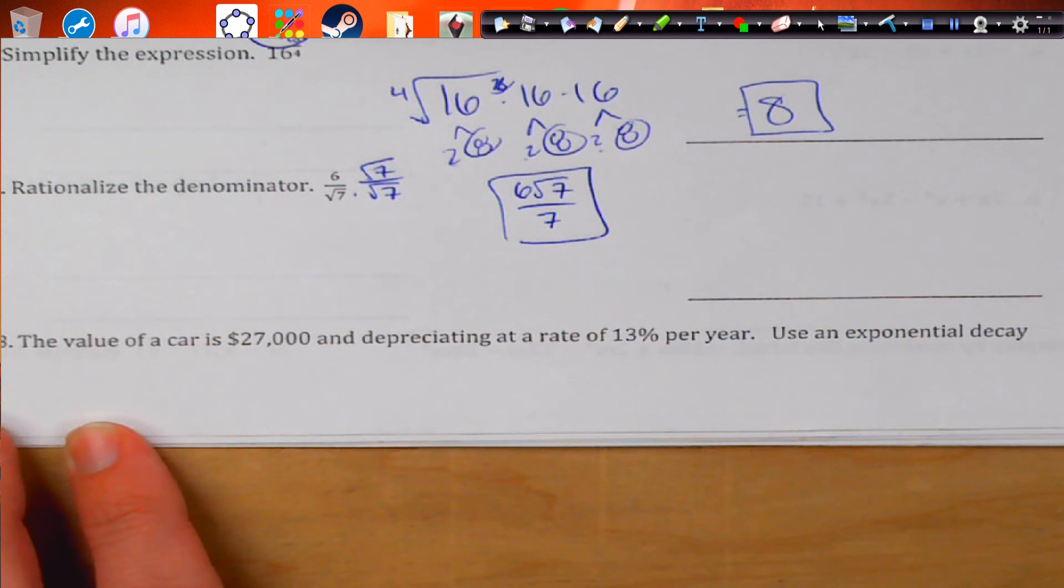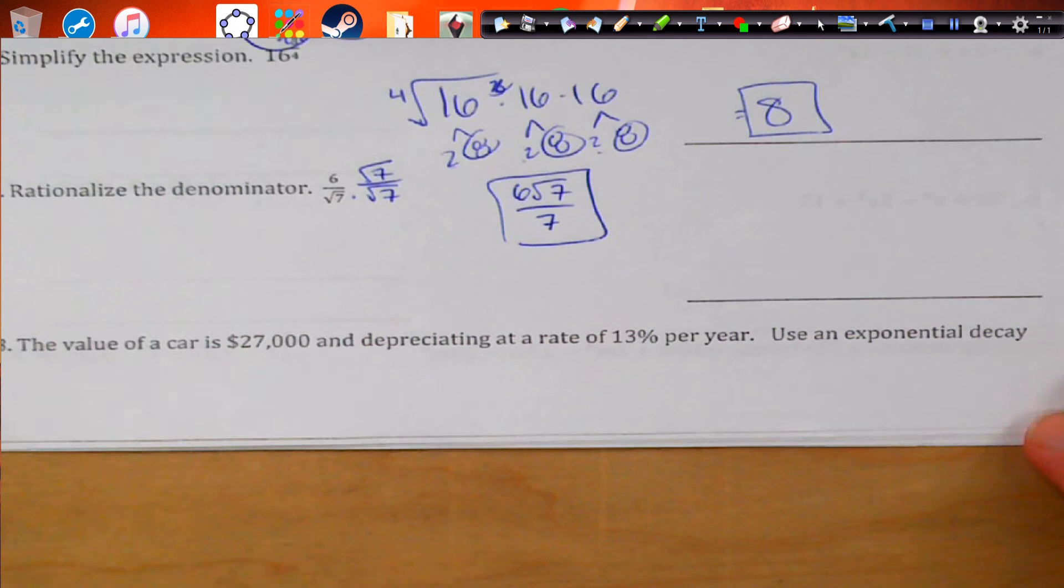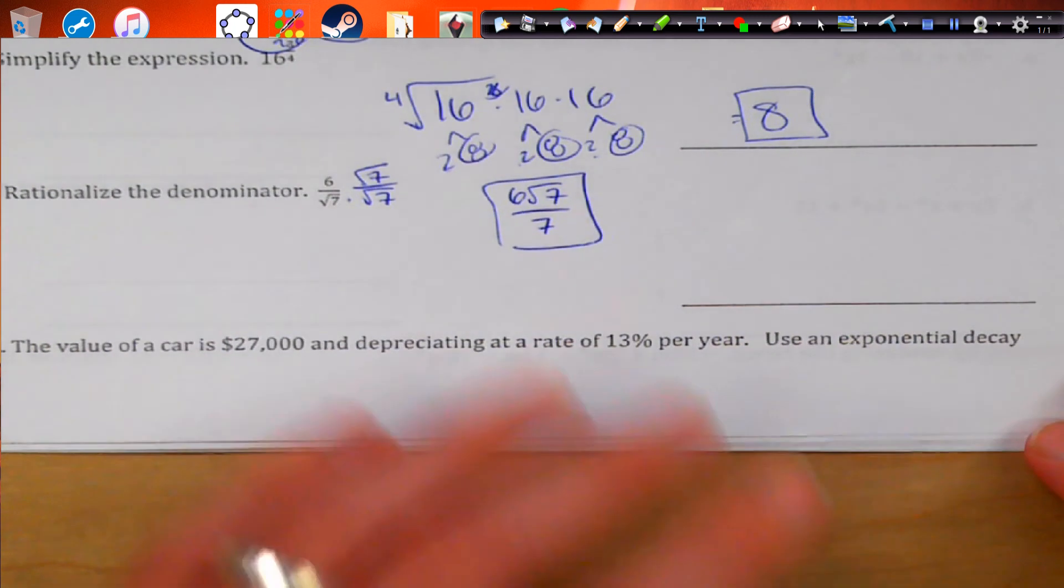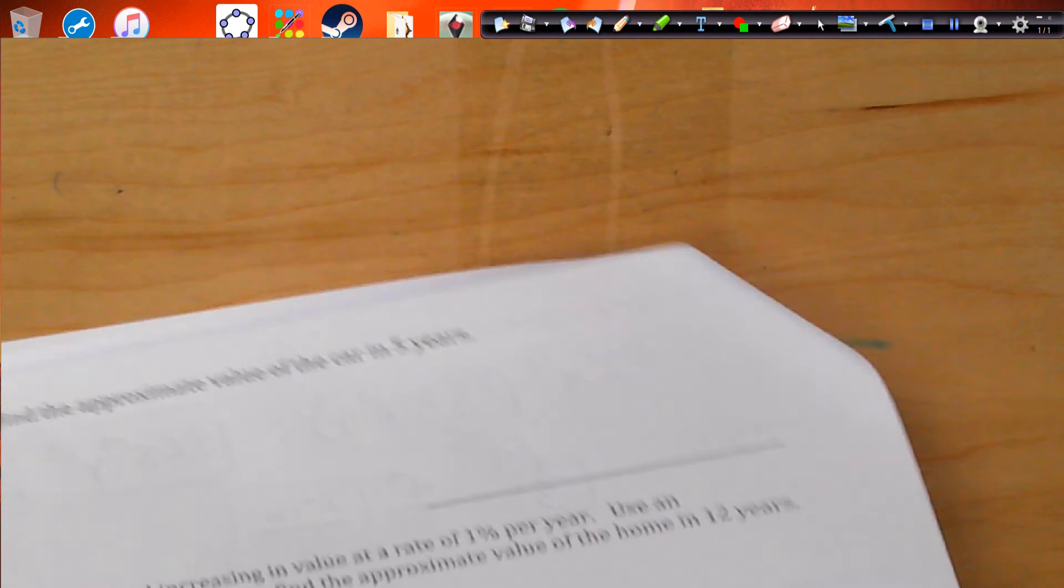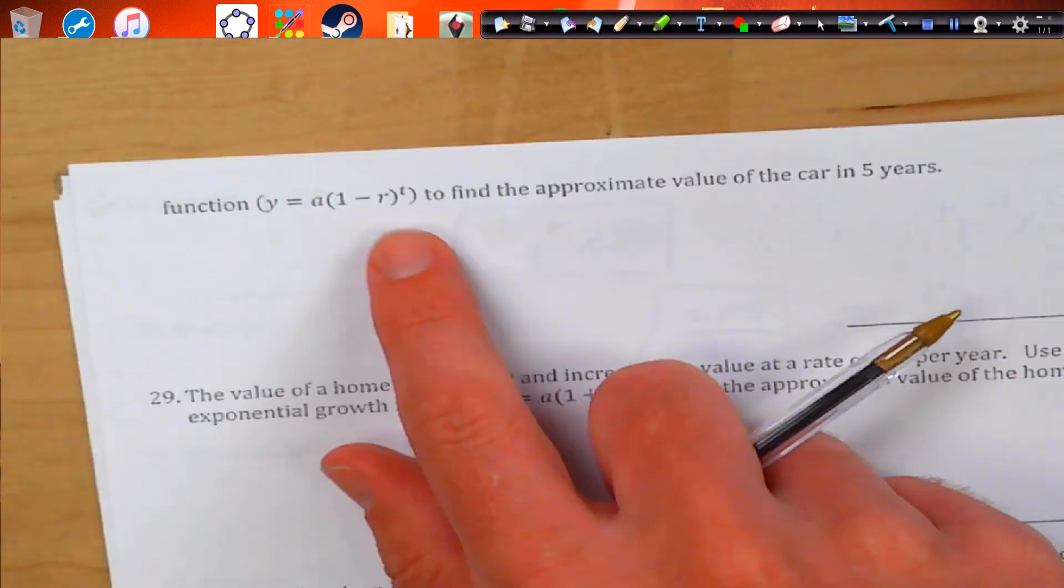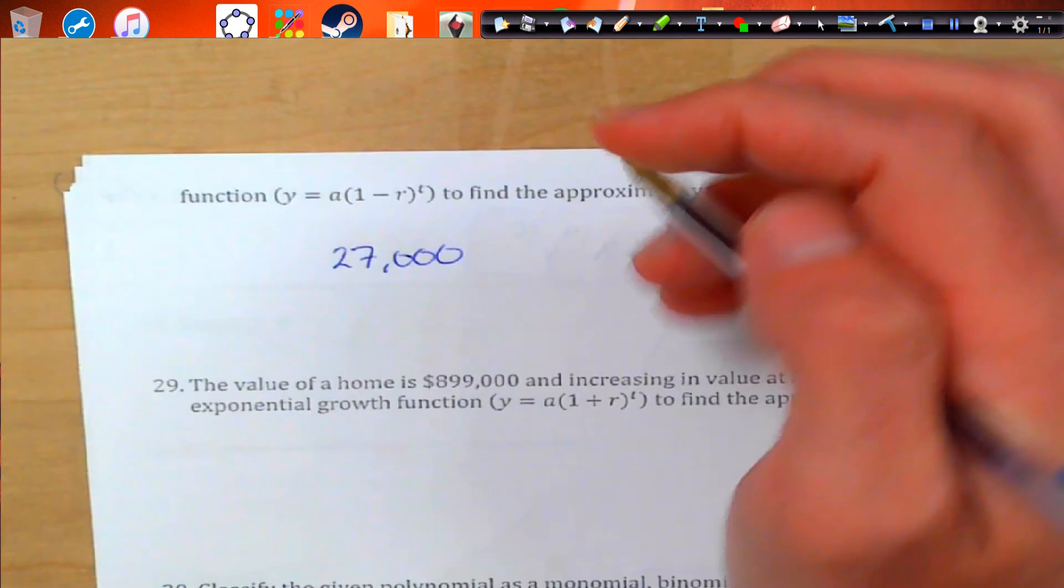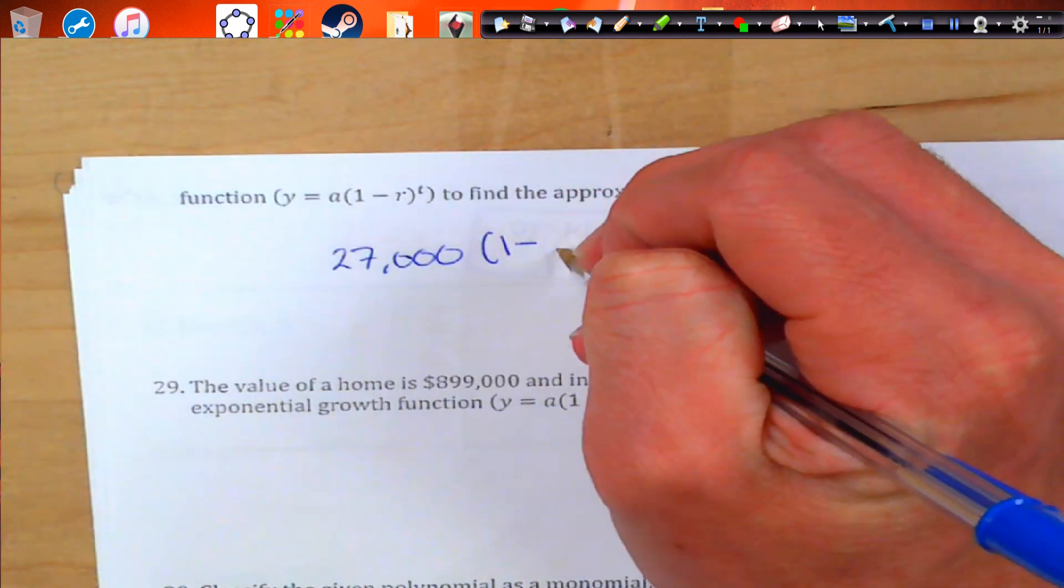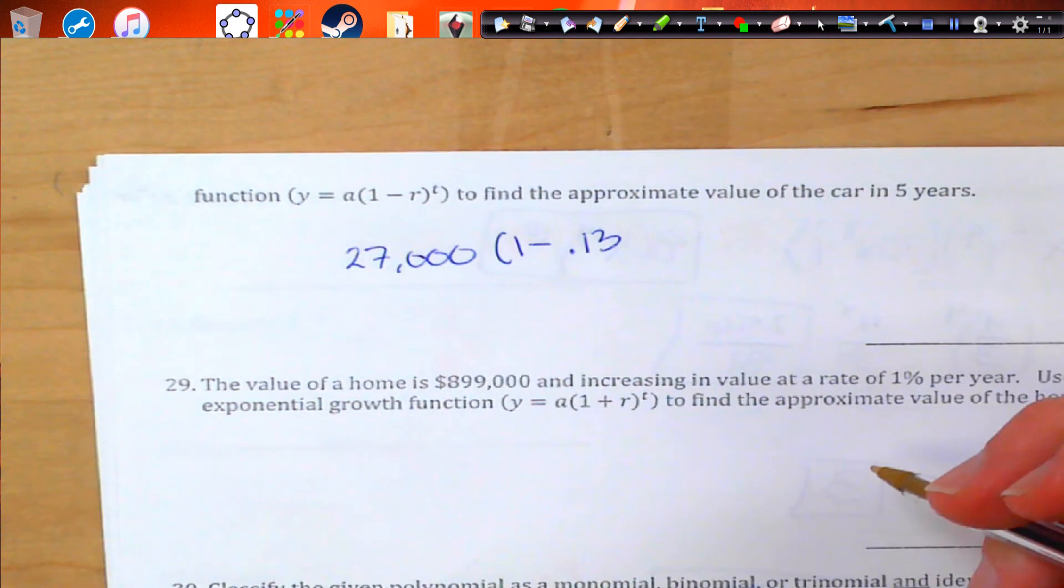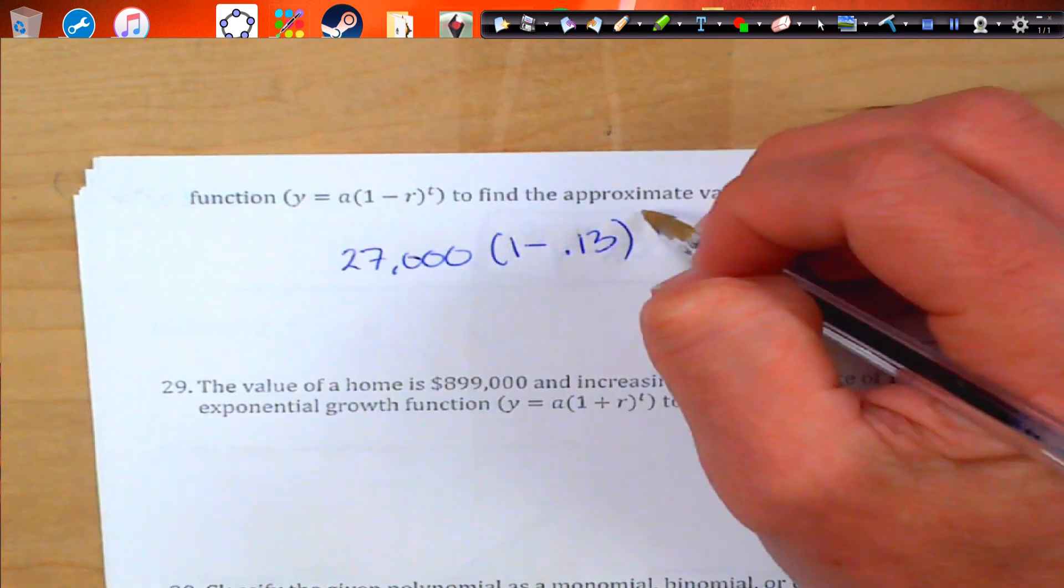Welcome, part two. Let's get started. The value of a car is $27,000 and depreciating at a rate of 13% per year. Use exponential decay. Okay, first of all, let's go do our work on the other side. They give us the formula. So we're at $27,000. That's our initial value, A. 1 minus 13% is actually 0.13. And it's going over five years.